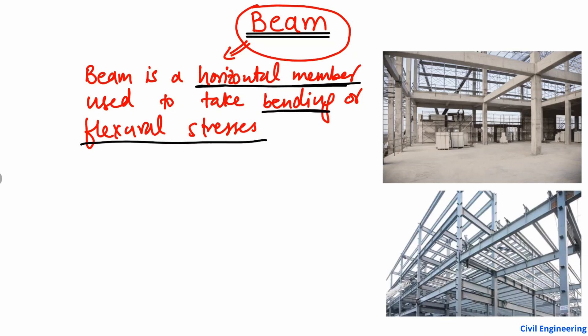A beam is only designed for bending or flexural stresses. Let's consider these two pictures. In picture number one, we have beams in a structure. Here you can see the horizontal members — these are beams. Notice that columns are vertical members, but a beam is a horizontal member. You can see multiple beams here, all of which are horizontal members.